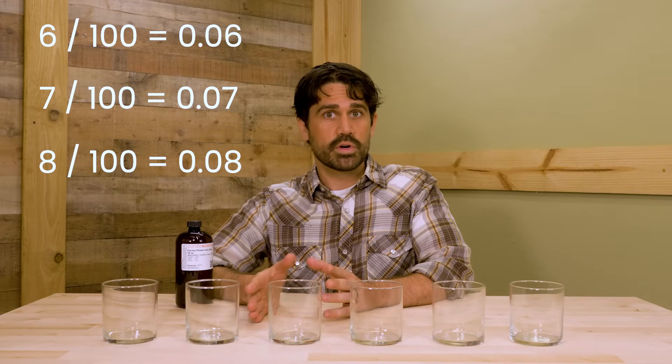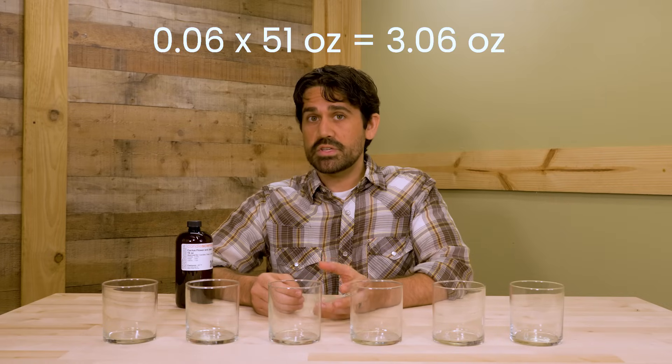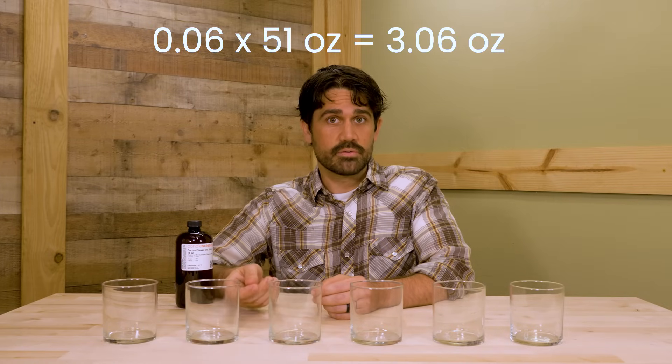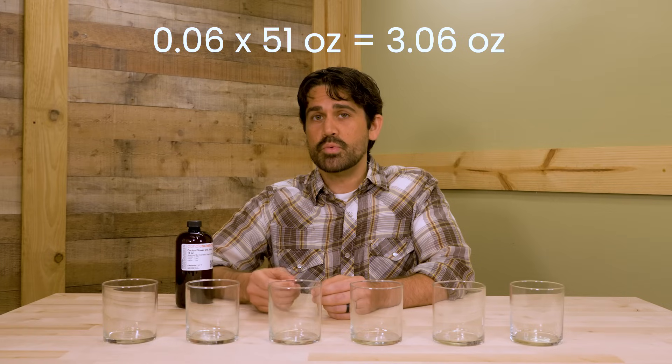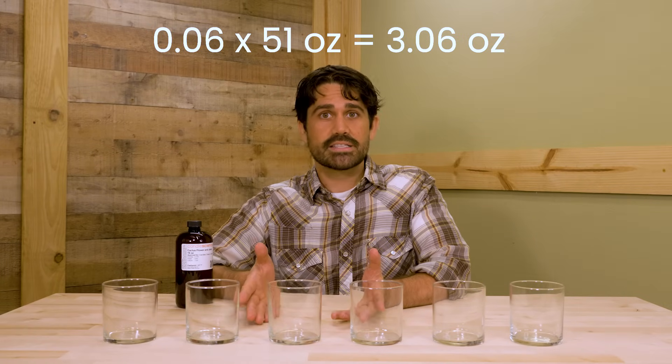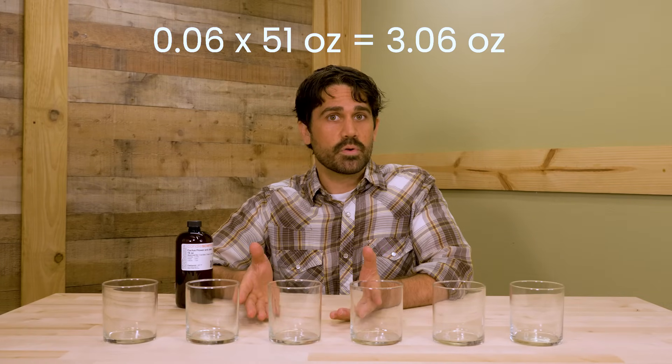For this example, we're going to stick with 6%. So if you take that .06 and multiply it by the 51 ounces of wax that we need, you're going to get 3.06 ounces of fragrance — and that's the amount you need for your project. Mini scales will not be that precise with their calculation, so it's okay to round up or down slightly, but you're aiming for that 3.06.